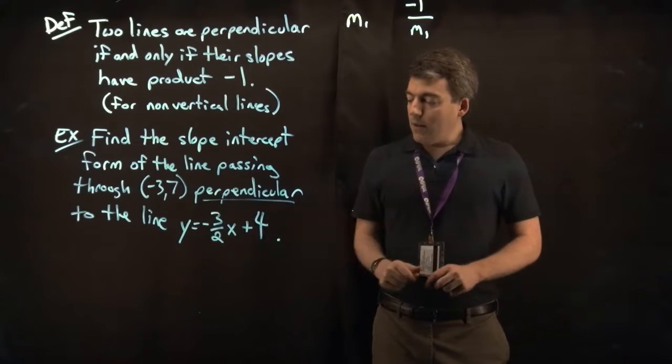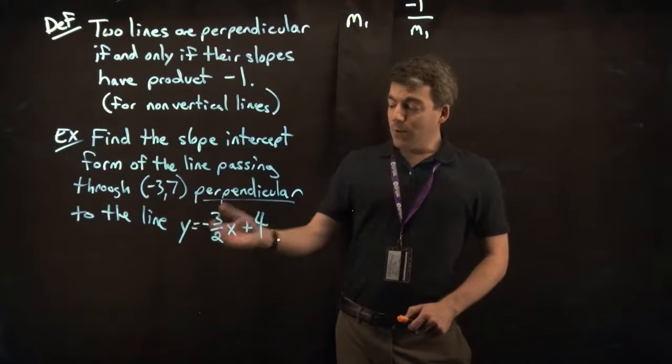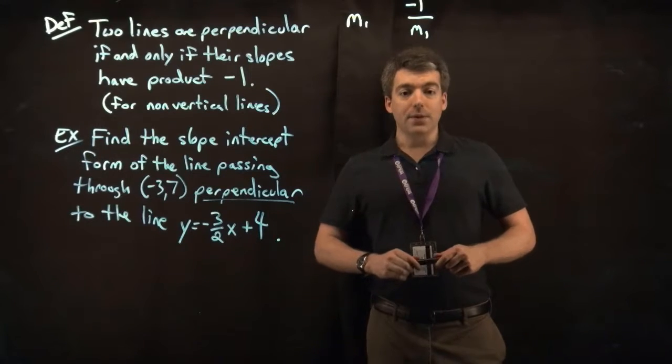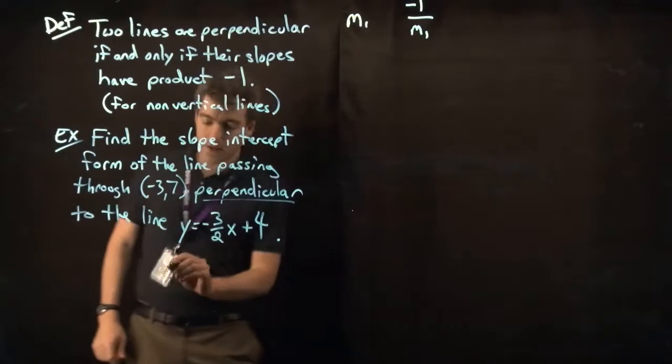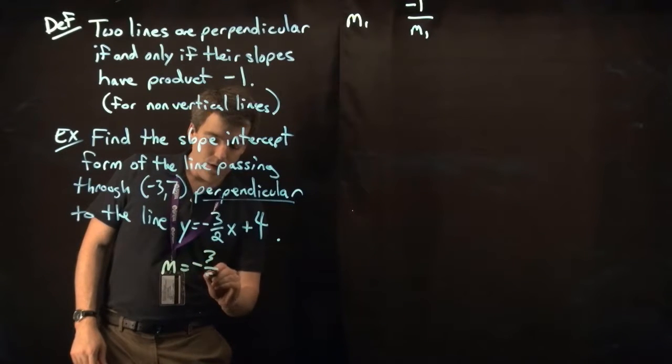We look at this line, you can see that it is already in slope-intercept form, y equals mx plus b. The slope here is negative 3 halves. So the slope of our line is negative 3 halves.